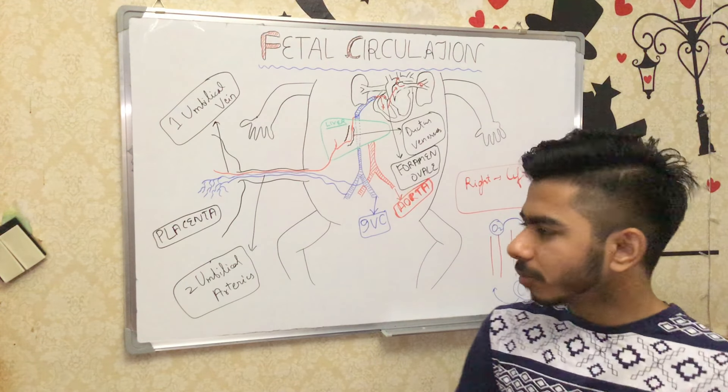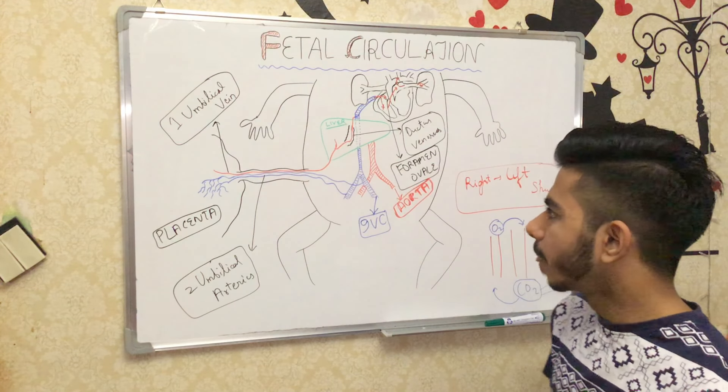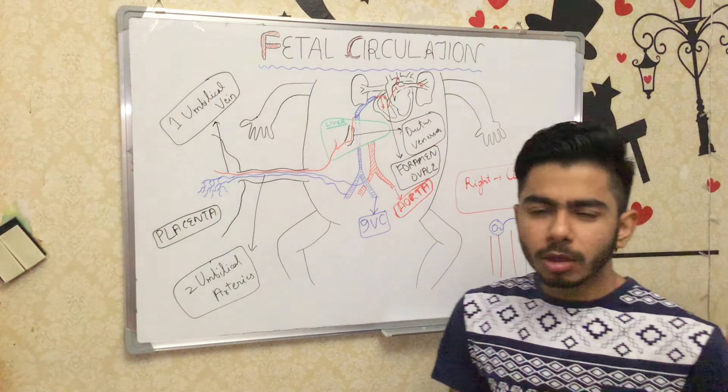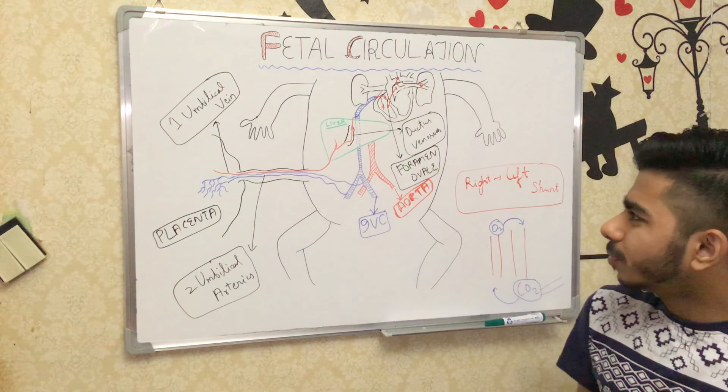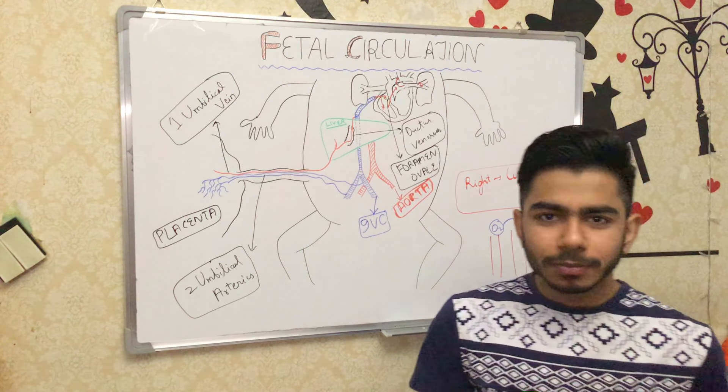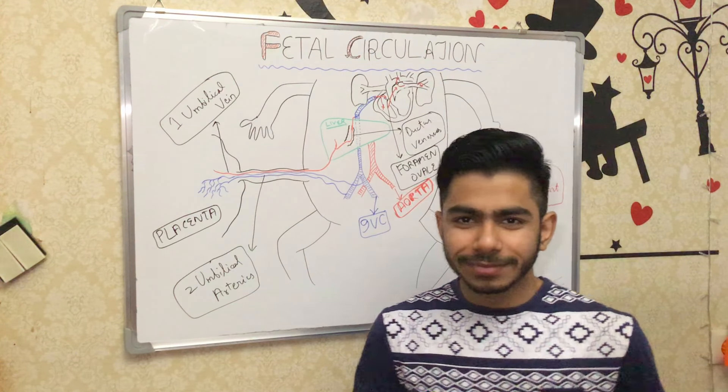So that was the overview of fetal circulation — how the fetus receives oxygenated blood and delivers it to its tissues, and how deoxygenated blood drains back to the mother through the placenta. I hope you liked the video. Thanks for watching.